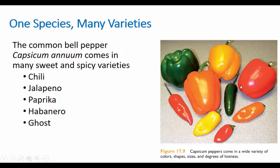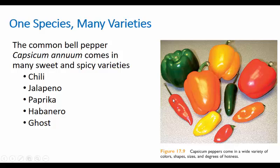An interesting evolutionary note: for most spicy peppers, it's not the body of the fruit that's spicy — it's the seeds inside. That's relevant because if you're a plant, you want animals to eat your fruit but not crunch the seeds. One hypothesis for why peppers developed capsaicin is that it convinces small mammals to eat the fruit but swallow the seeds whole rather than chewing them. In Central America, animals like the coati are the target: eat the fruit, but don't chew the seeds.